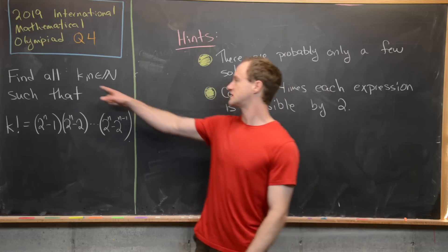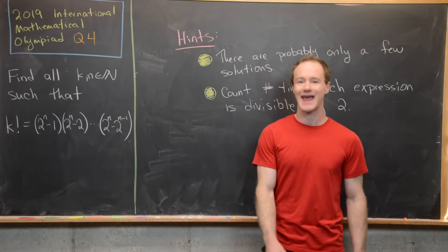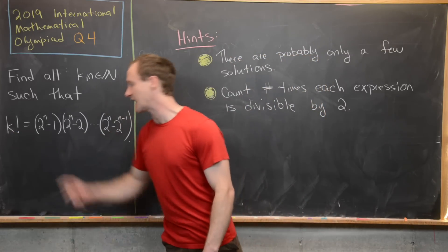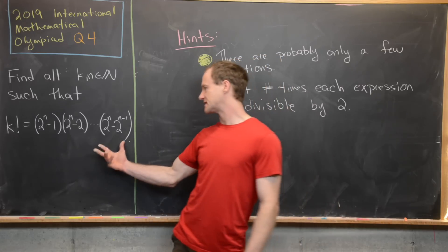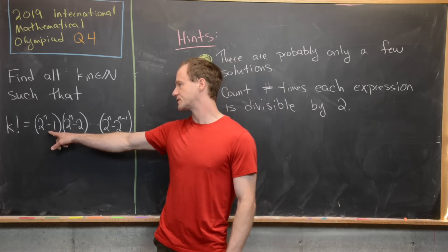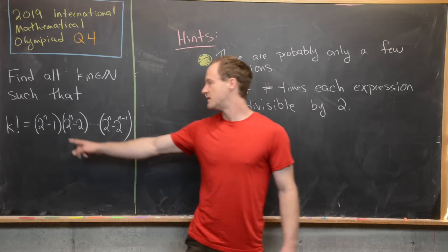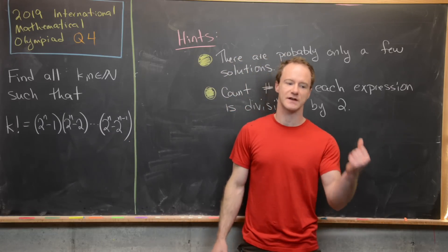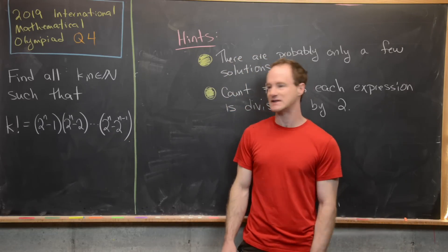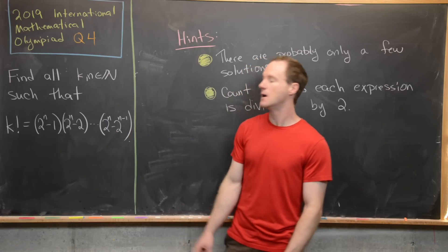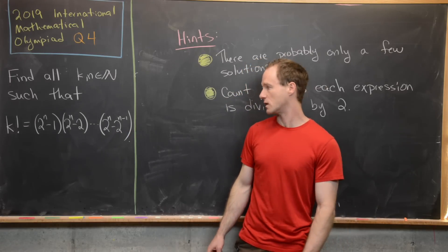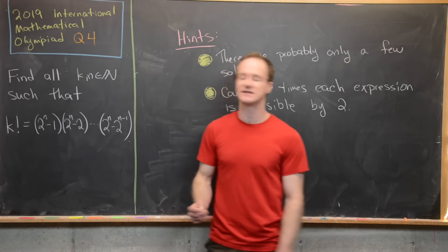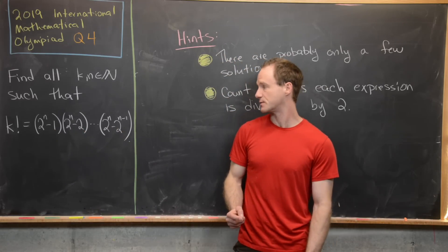The goal is to find all natural numbers k and n satisfying this equation. On the left hand side we have k factorial. On the right hand side we have this product which starts with two to the n minus one, then two to the n minus two, then two to the n minus four, then two to the n minus eight, all the way up to two to the n minus two to the n minus one. So our product is ascending in powers of two in this second term that's being subtracted from each part.